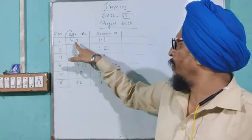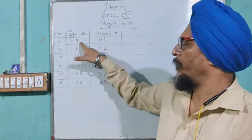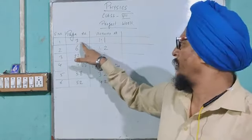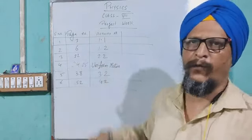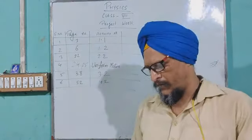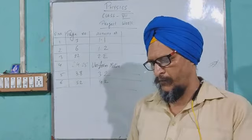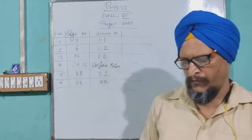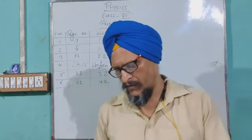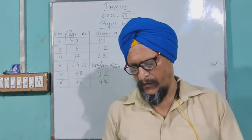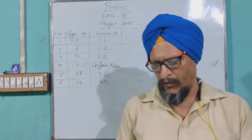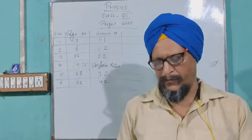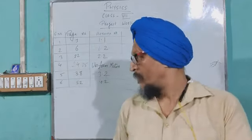This is page number 3, activity 1.1. So in 1.1, the aim is to measure the area of an irregular object using a graph paper.